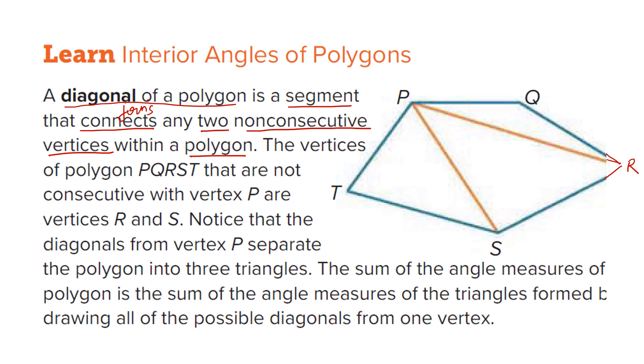So how many sides it has? 1, 2, 3, 4, 5. Five-sided polygon. So it's called five-gon or it's also called pentagon.